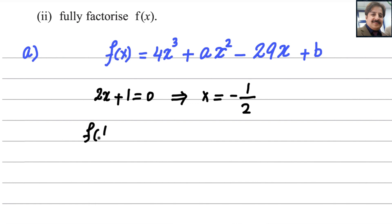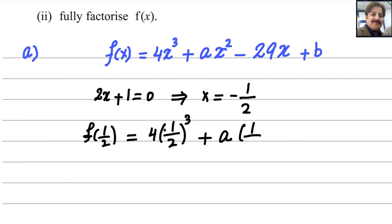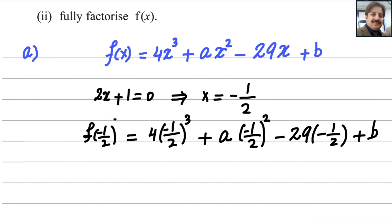f of negative 1 over 2. Replace x with negative 1 over 2: 4 times negative 1 over 2 cubed plus a times negative 1 over 2 squared minus 29 times negative 1 over 2 plus b. Since 2x plus 1 is a factor, this equals 0 — the remainder is 0 by the remainder theorem, just as 2 is a factor of 8 means 8 divided by 2 leaves remainder 0.